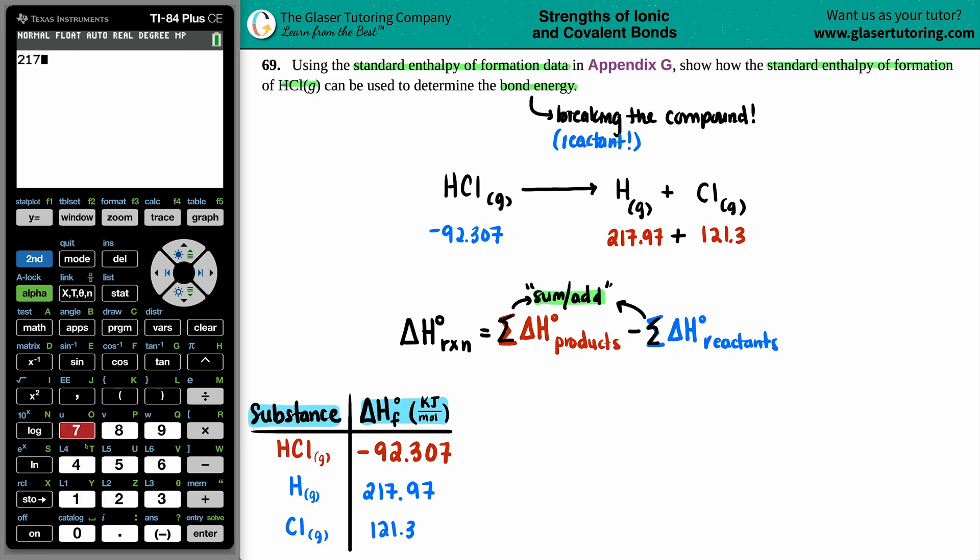So 217.97 plus 121.3. Beautiful. So we get a total of 339.27 kilojoules for the product side, and now we're ready to find out that delta H for the reaction.